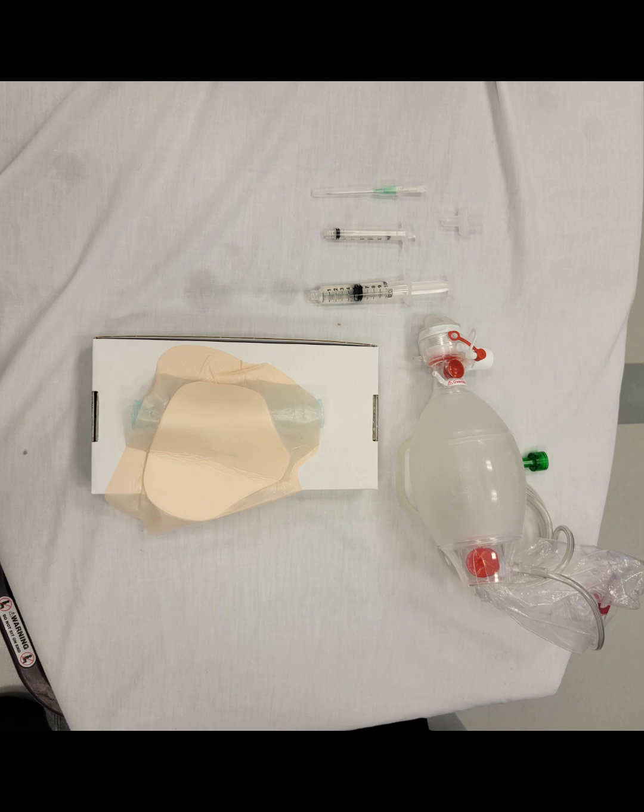For the needle cricothyroidotomy, you will need a large bore needle with angiocath, about 14 gauge will be appropriate, a BVM, an ET tube, a 3 milliliter syringe, a 10 milliliter syringe filled with saline, and an ET tube connector piece, either a 3.0 which will fit directly into the angiocath, or a 7.0 which will fit in and attach to the 3 milliliter syringe.